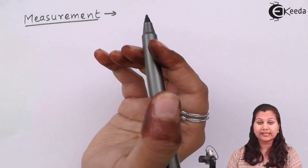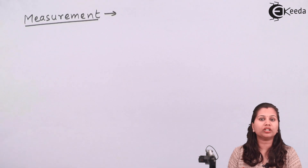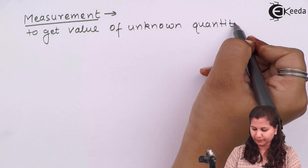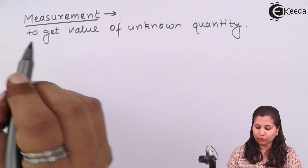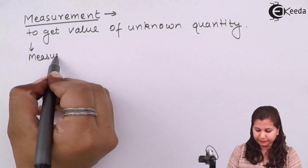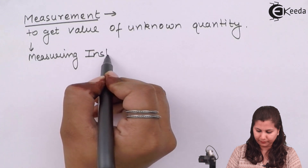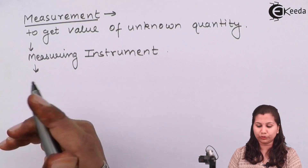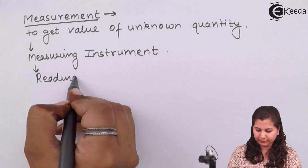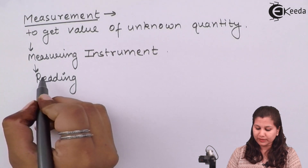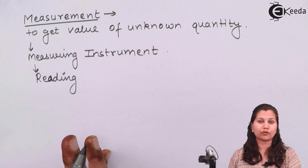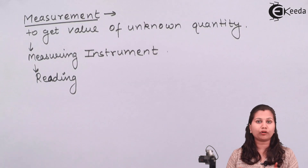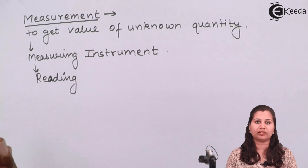If we define what is measurement — measurement is to get the value of the unknown quantity. To get this value we use a measuring instrument, and this measuring instrument gives us a reading. Suppose this reading of the measuring instrument is different from the actual value of the unknown quantity — so there will be some variation in the two values.